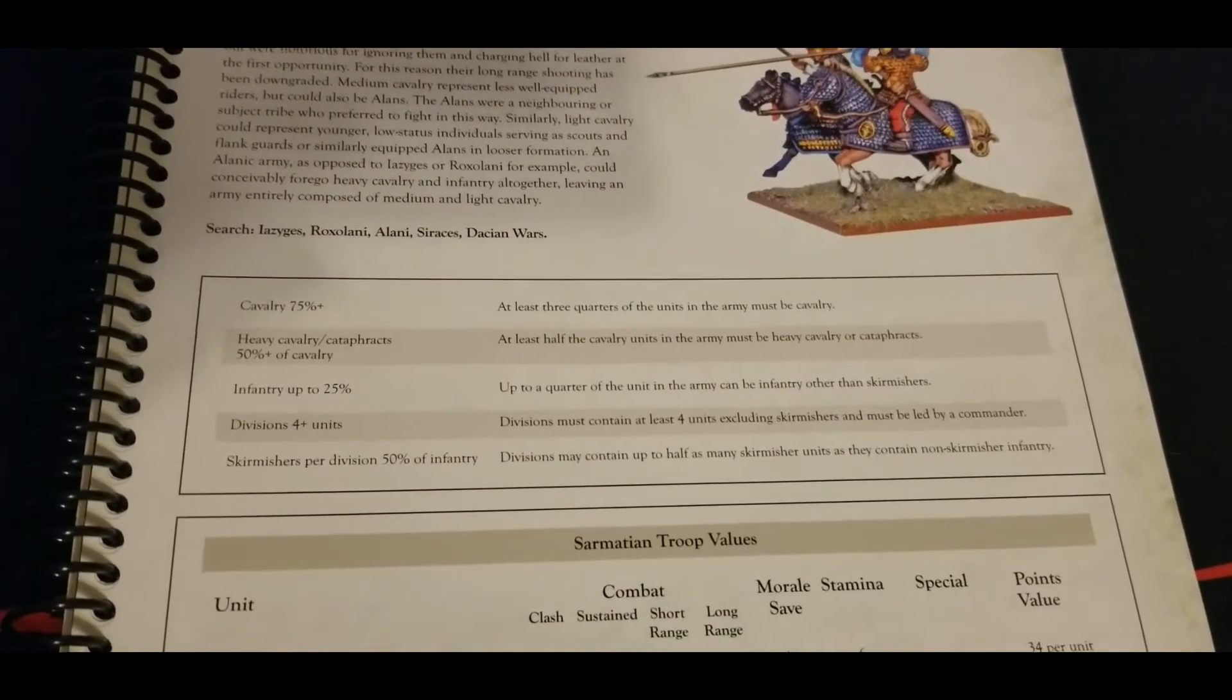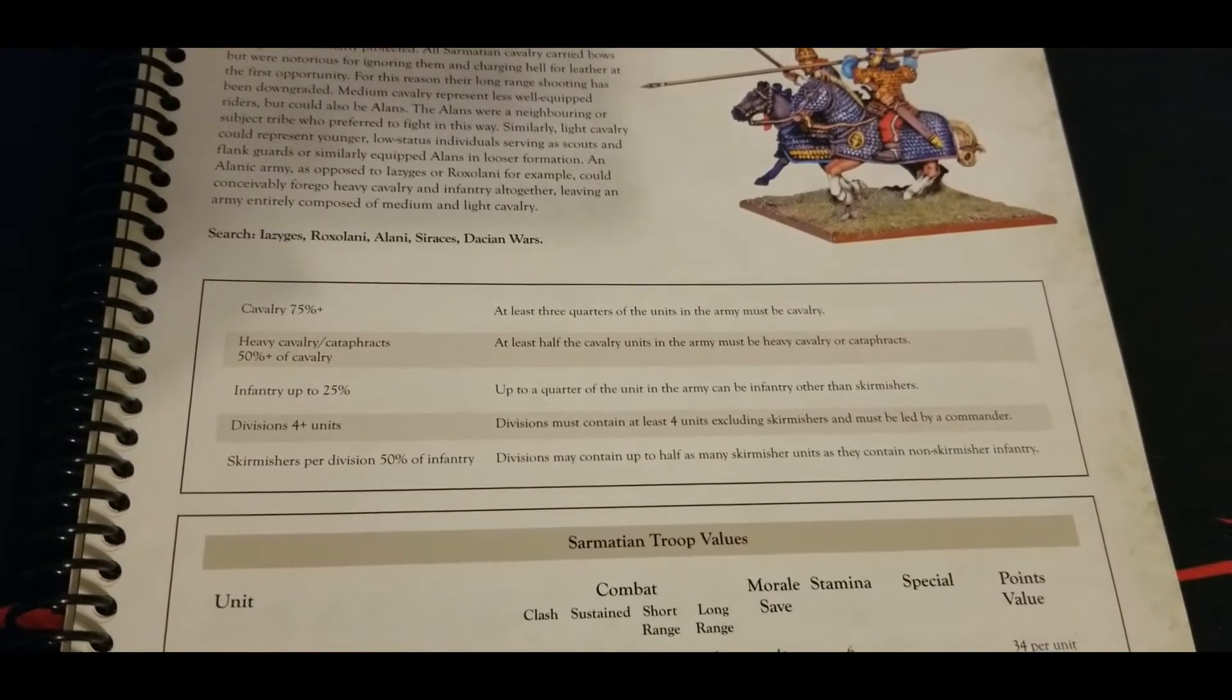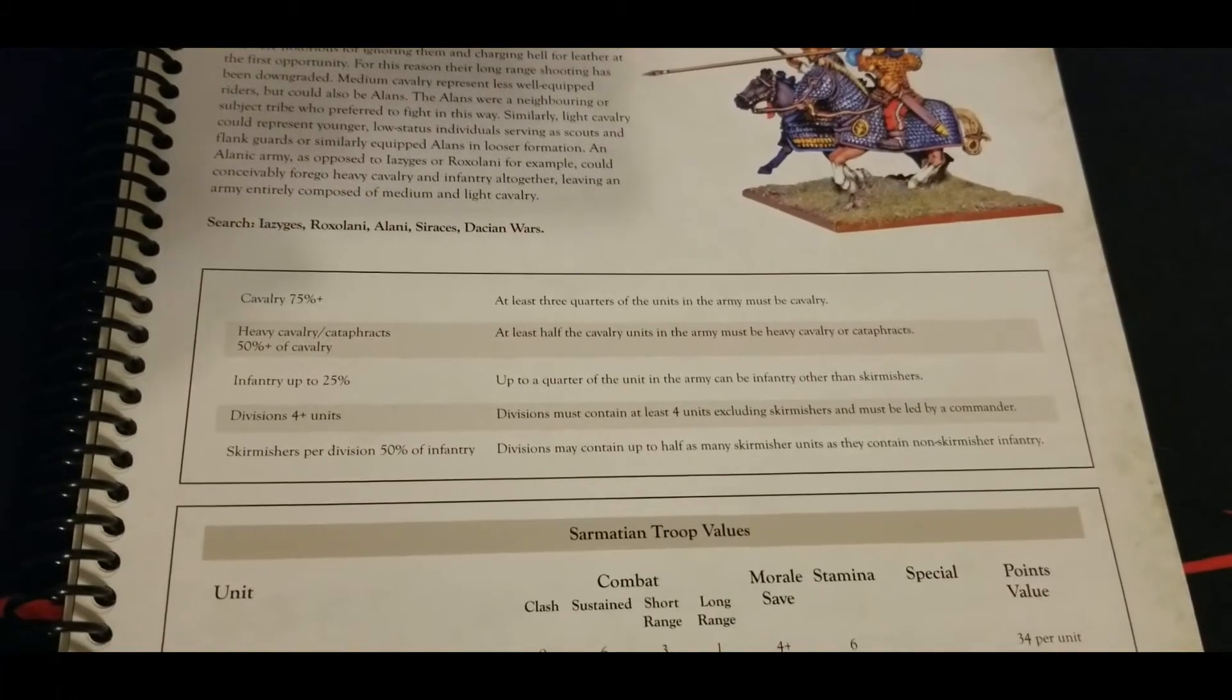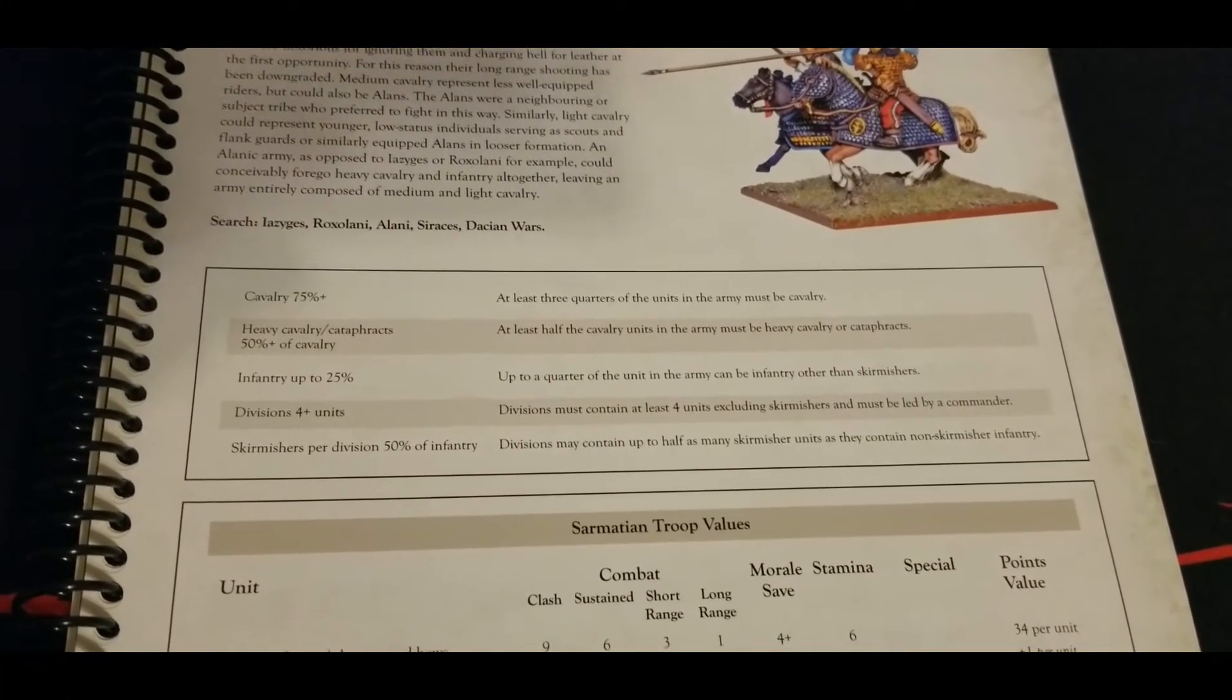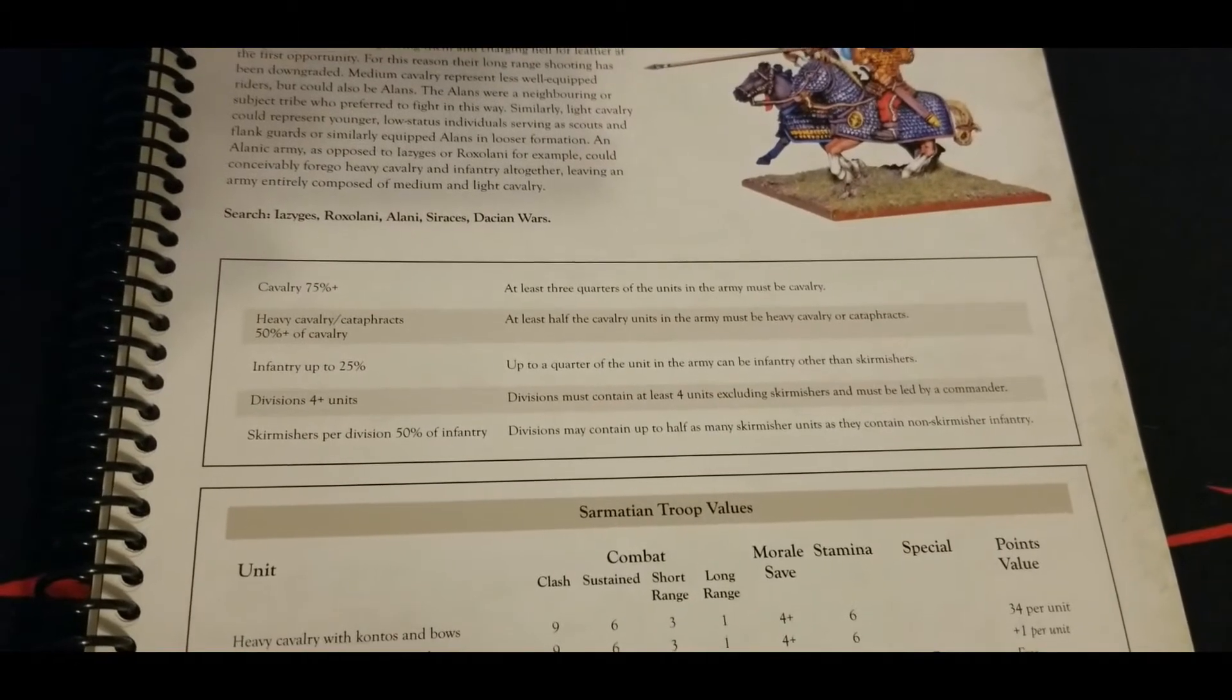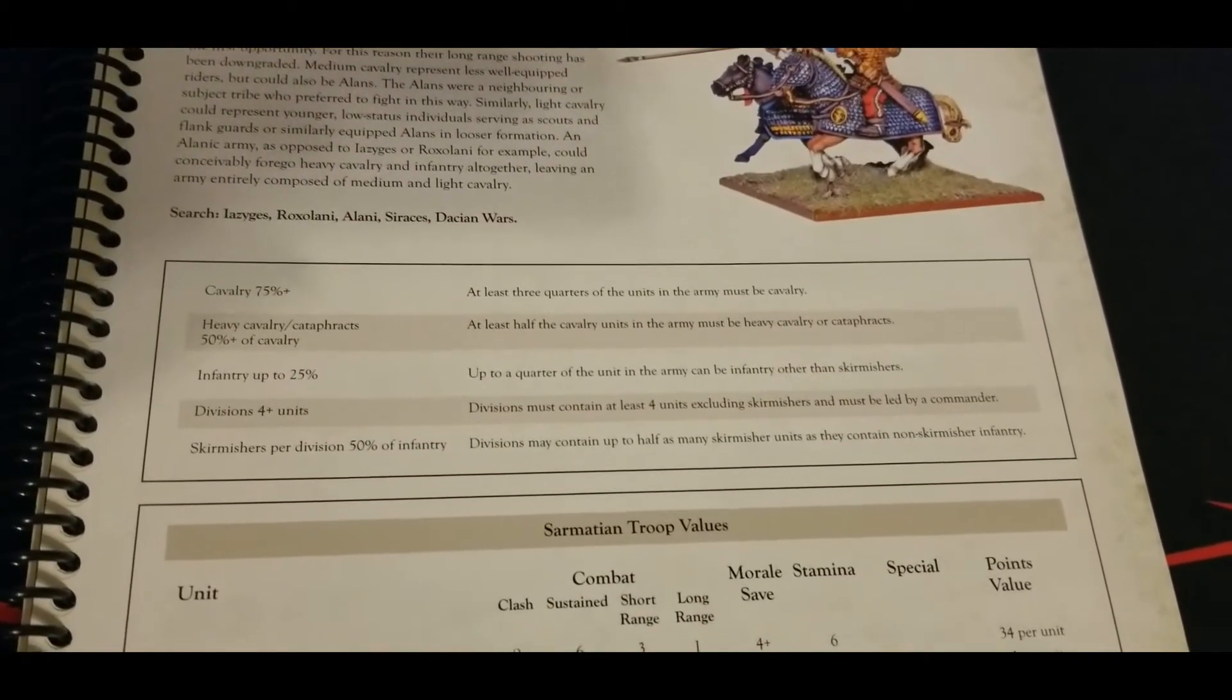Of those, 50% have to be heavy cavalry and/or cataphracts. Basically you're going super heavy cavalry if you want to go the cataphract route, and then the remainder is infantry. There's no other weird quirks about the list. Division-wise, pretty standard.